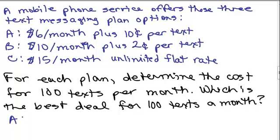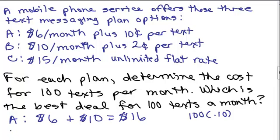So for Plan A, again, it's going to be $6 a month. We've got 100 texts. 100 texts, 10 cents each, that's going to be $10. So if you have Plan A, you would pay $16 that month.